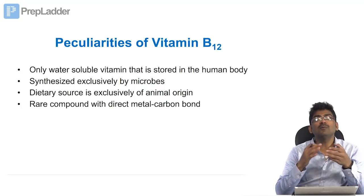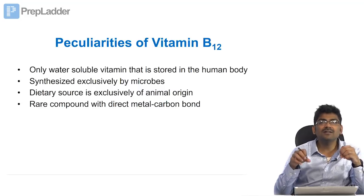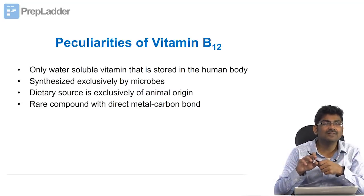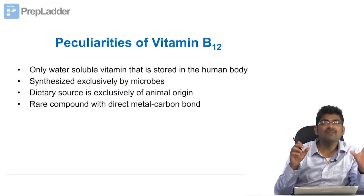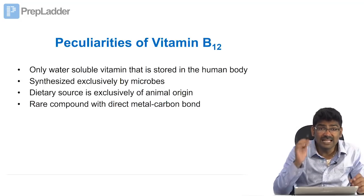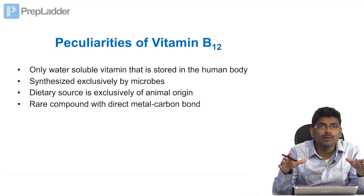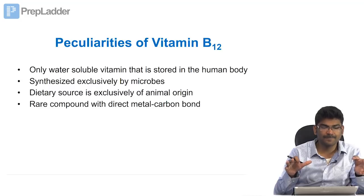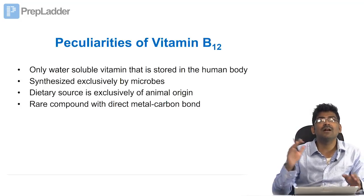Hello friends, let us discuss a high-yield topic: vitamin B12. Vitamin B12 is unique in many different ways. It is the only water-soluble vitamin that is stored in the human body. All fat-soluble vitamins are stored in the body, but water-soluble vitamins in excess are all excreted in the urine. Vitamin B12 is the only water-soluble vitamin stored in the liver. It is synthesized exclusively by microbes and cannot be synthesized by humans. That is why the dietary source is exclusively of animal origin — it is not present in plants.